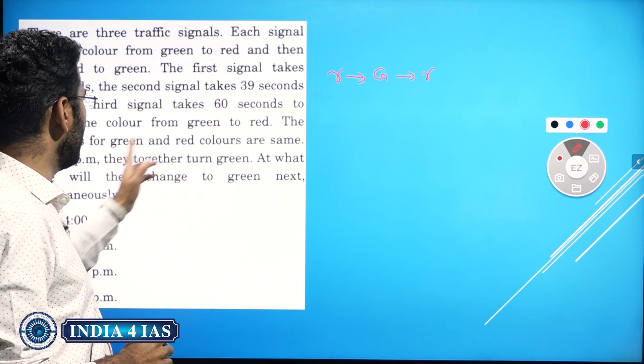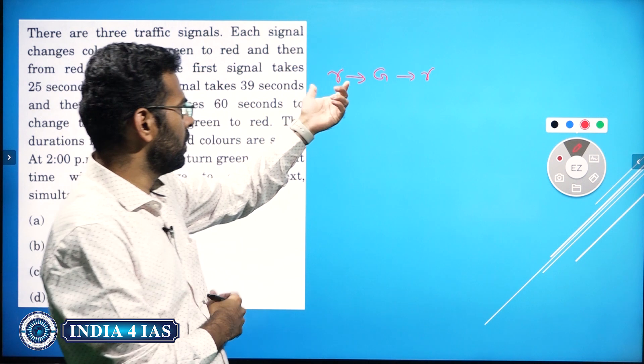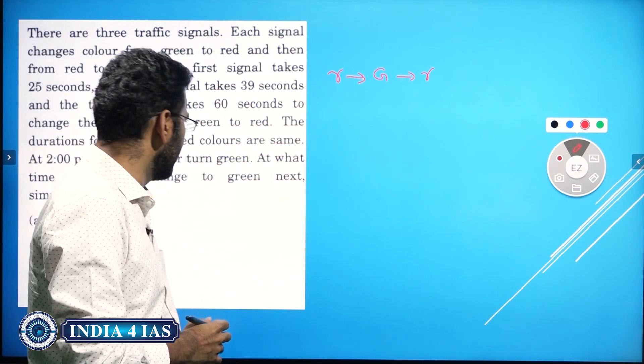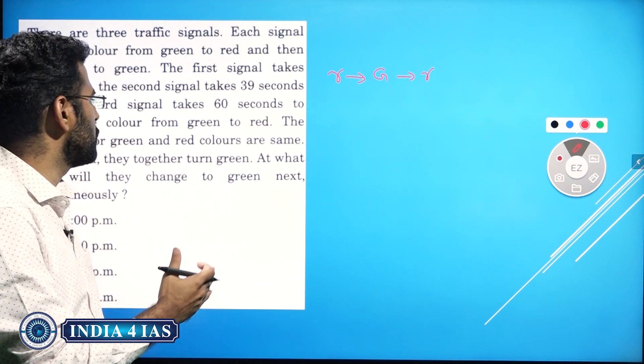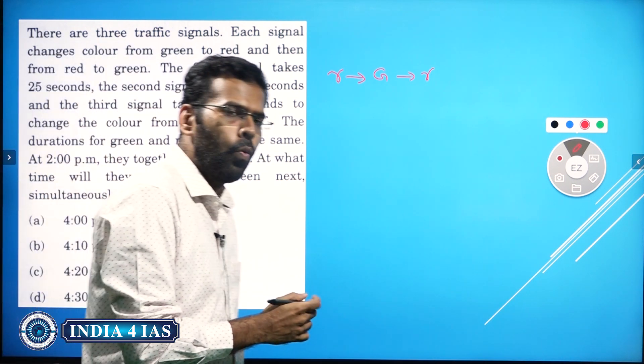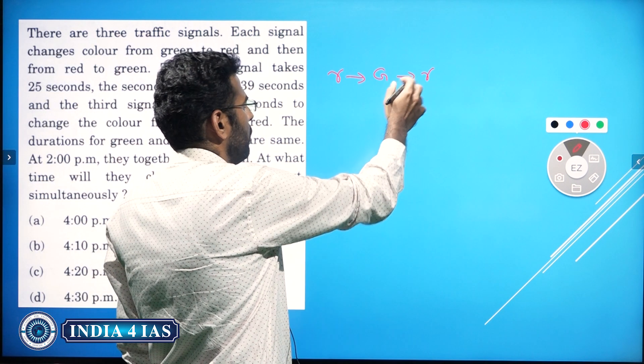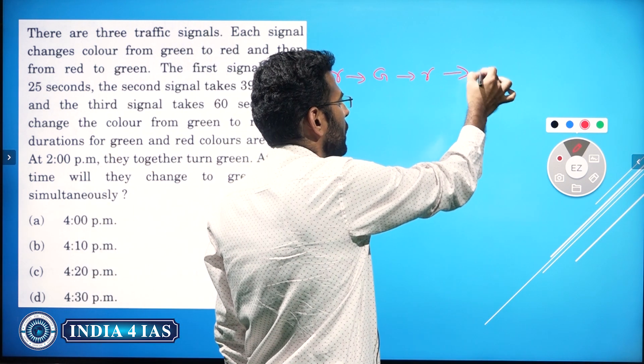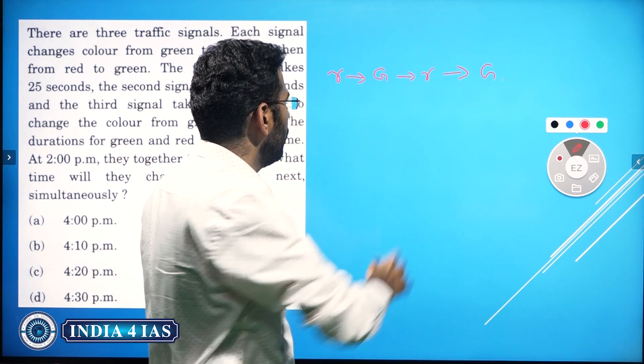The duration of green and red colors are the same. At 2 PM, they together turn green. At what time will they change to green next? The cycle is red to green, green to red, and again red to green.